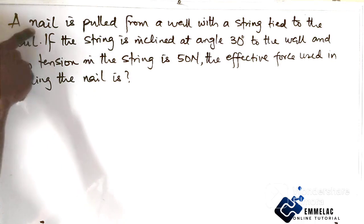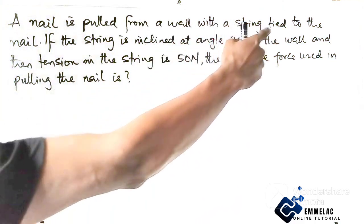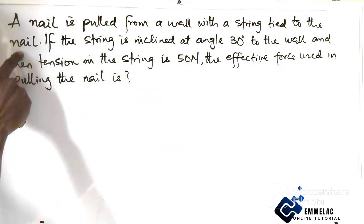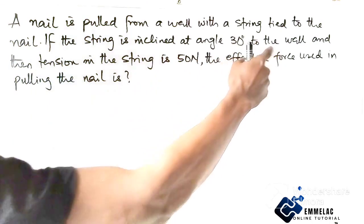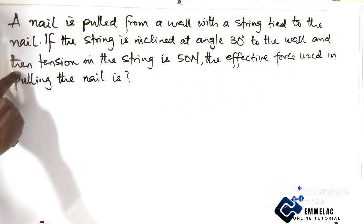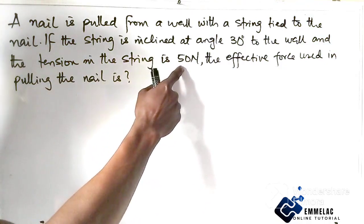A nail is pulled from a wall with a string tied to the nail. If the string is inclined at angle 30 degrees to the nail and the tension in the string is 50 Newton.